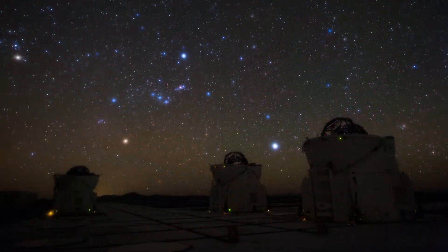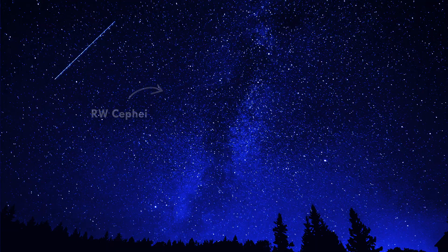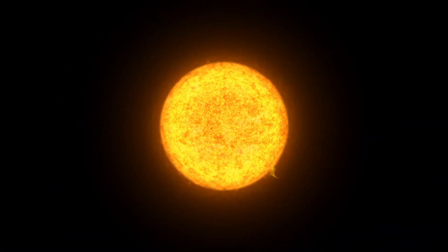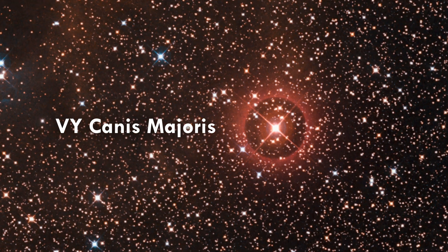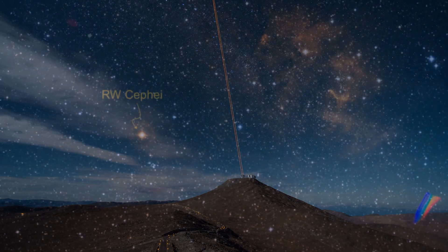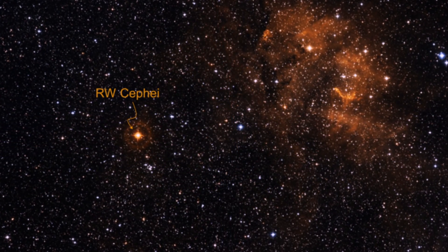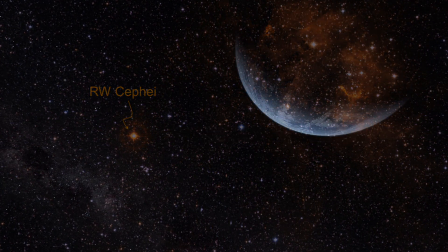RW Cephei, a K-type hypergiant and semi-irregular variable star in the constellation Cepheus and amongst the largest known stars by radius, in the same class as UY Scuti and VY Canis Majoris, just underwent a great dimming event similar to Betelgeuse. What you will find fascinating is this star is quite far away, about 11,000 to maybe 16,000 light years from Earth.